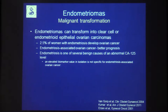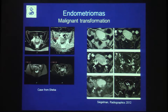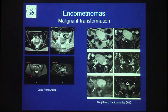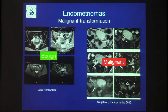Endometriomas can undergo malignant transformation in about 2.5% of patients — important to remember. The associated cancers have a better prognosis. Endometriosis is also one of several benign causes of elevated CA-125 levels, so an elevated biomarker alone is not indicative of cancer. Cases from the literature and our practice illustrate soft tissue masses that enhance — unfortunately, MRI cannot reliably distinguish benign from malignant transformation; histology is required.